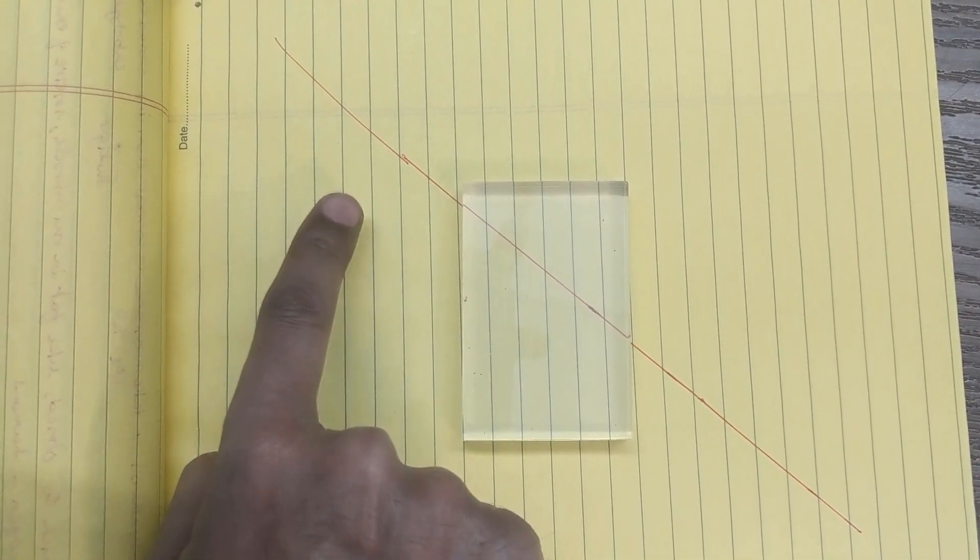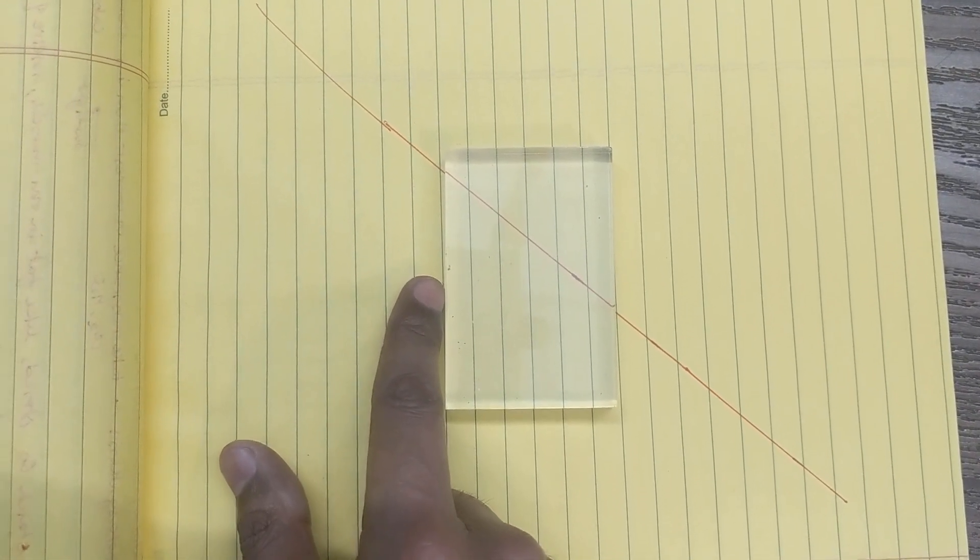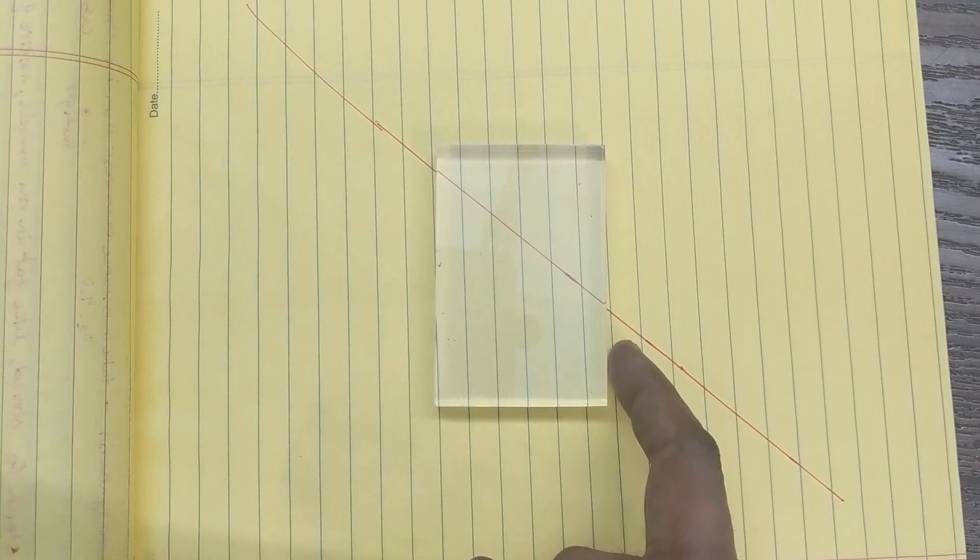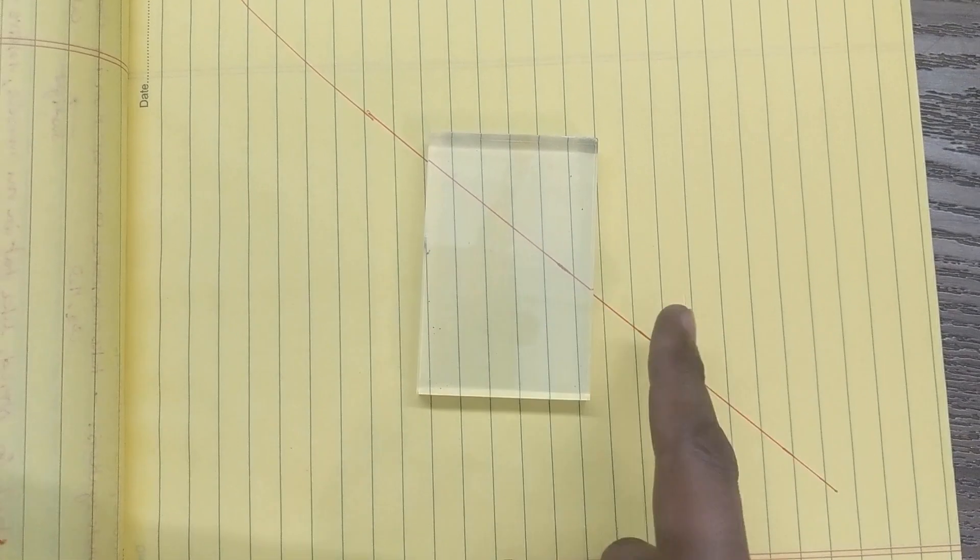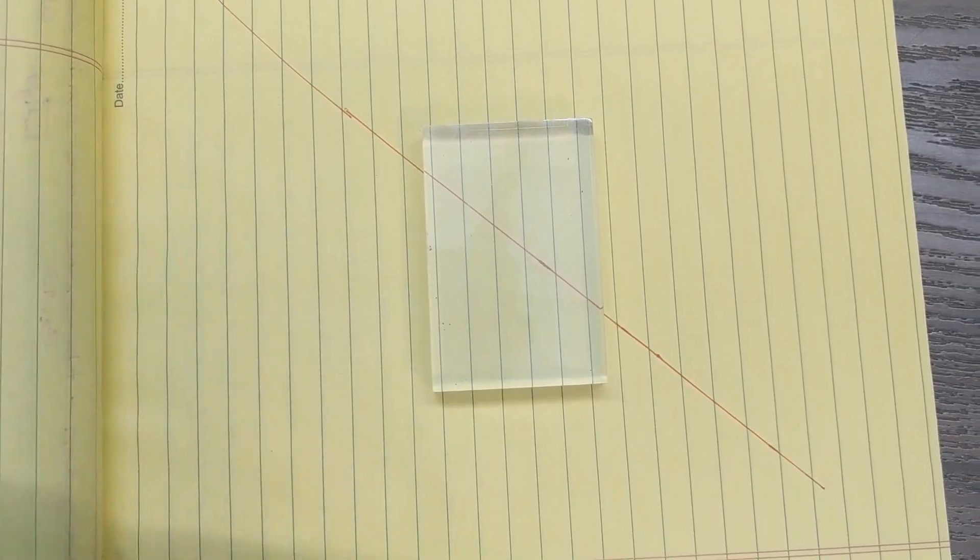When the denser is on the air, then the path will change because here is the surface. If you look at the surface, here is the medium. Here is the same way.